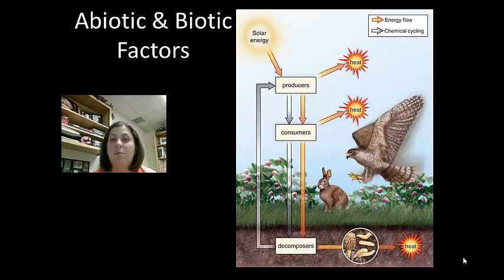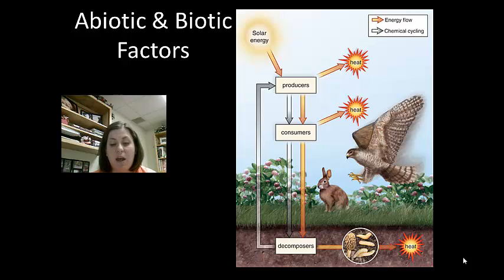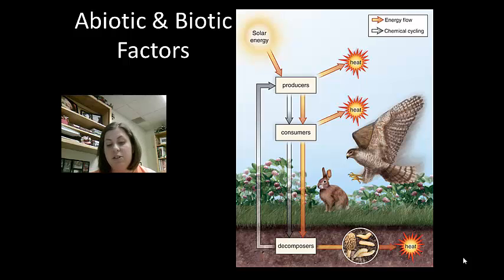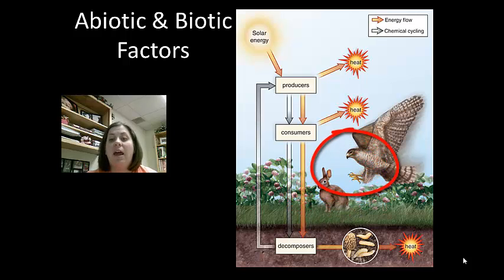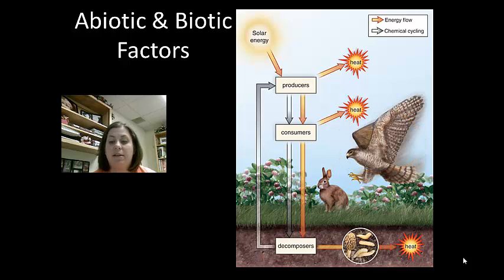In an ecosystem, energy flow relies on the producer's ability to absorb solar energy. This means that all energy on Earth comes from the sun. Producers absorb the solar energy and convert it into chemical energy, or carbohydrates. Then consumers get energy by consuming the plants, or the animals that consume the plants. So the solar energy goes into the producers — the plants, the grass — the rabbit eats those, gets energy from that, and then the hawk eats the rabbit. Ultimately, it can all be traced back to the sun.